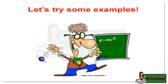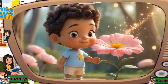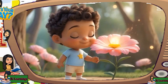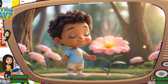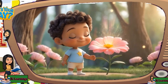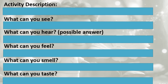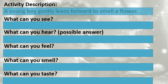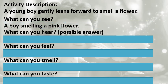Let's try some examples. Activity description: a young boy gently leans forward to smell a flower. What can you see? A boy smelling a pink flower. What can you hear?